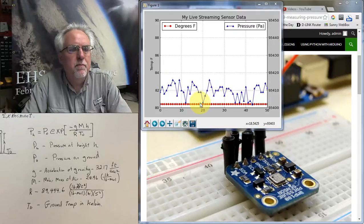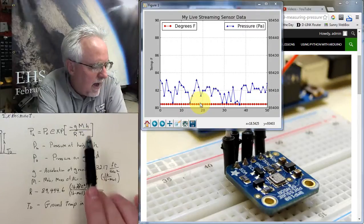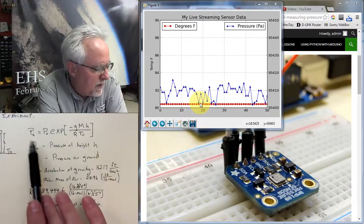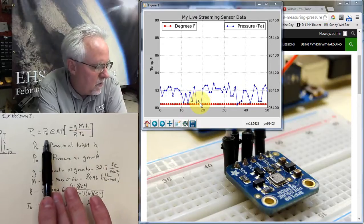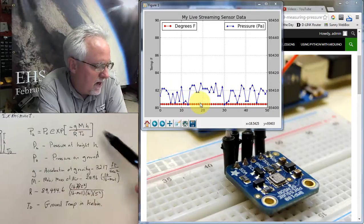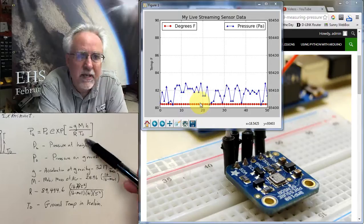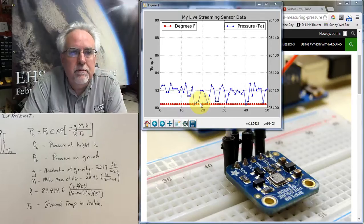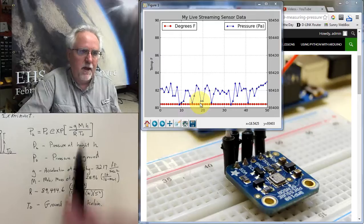And so if I'm going to want to make a height-o-meter, I want to calculate H based on everything else. I can measure pH, I can measure zero, and then down here in these constants, I know G, M, R, and T, so I should be able to calculate H. But we've got to do some algebra.